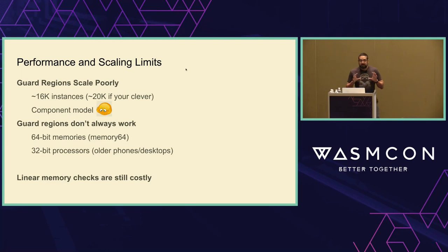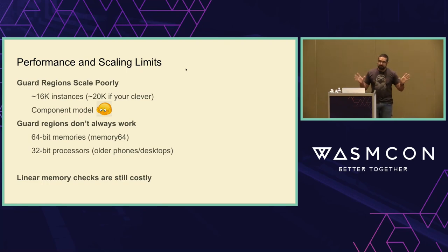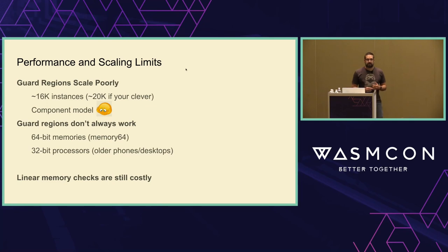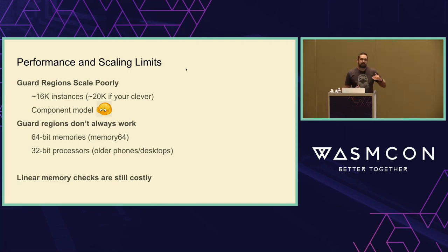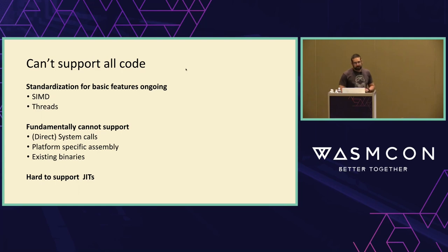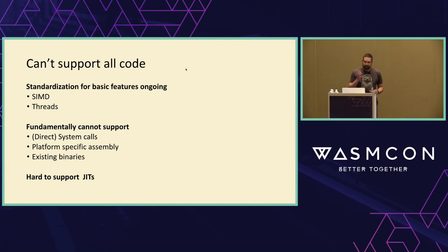We don't always get to use guard regions. If you want 64-bit memories, we're back to conditional bounds checks — 64-bit memories on Wasm are not efficient. This also doesn't work on 32-bit processors. We personally care because we ship sandboxing on Firefox to older desktop machines, and there are many 32-bit Android devices. Linear memory checks still add a heap-based addition to every load and store. And we can't support everything — some limitations will never be addressed.